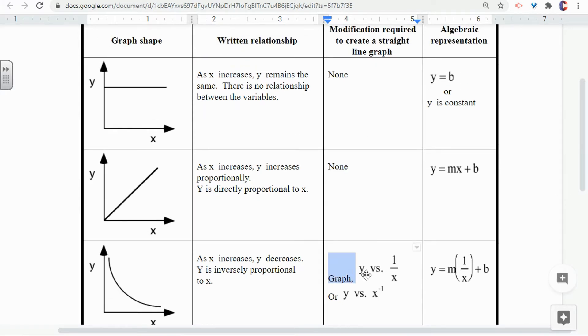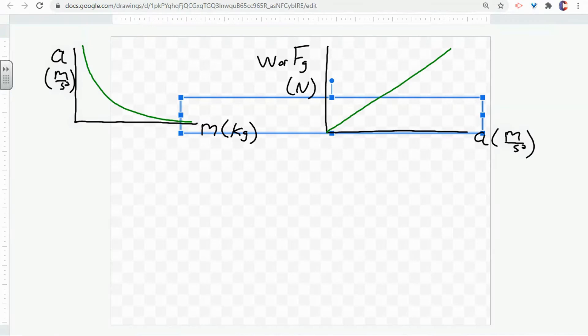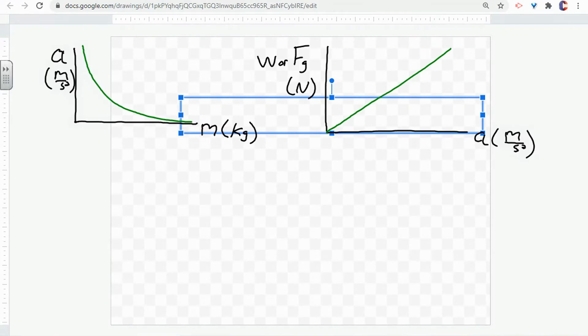But this graph here, we have to graph Y versus 1 over X, which means we have to produce a straight line graph. So let's go ahead and do that for the graph that is not linear.